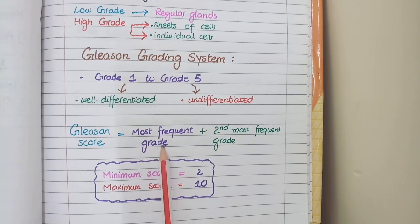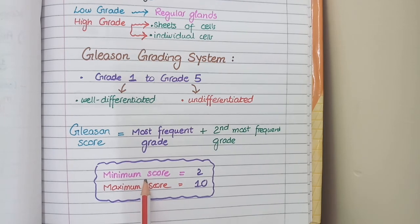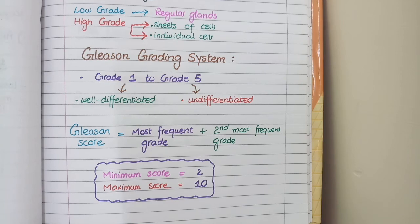Now it is obvious that a minimum value of Gleason score is 2 and the maximum value can be 10. Because the lowest grade is 1, so 1 plus 1 will be 2. Similarly the highest grade is 5, so 5 plus 5 is 10. And the significance of Gleason scoring is that the lower the number of Gleason score the better the grade of tumor will be or the lower the grade of tumor will be. And such tumors being well differentiated have better prognosis as compared to high grade tumors.